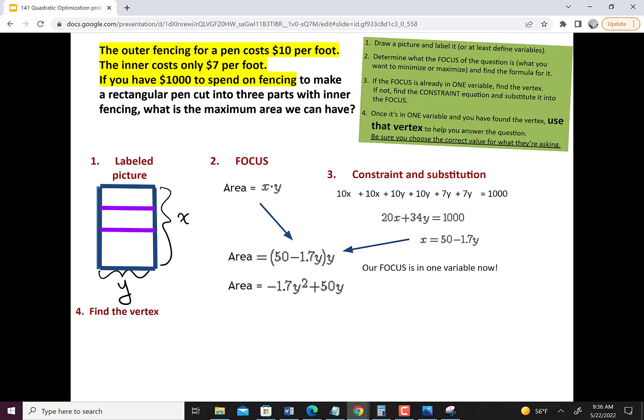And then lastly, we want to find the vertex. Once it's in one variable and you've found the vertex, use that vertex to help answer the question. So we need to find the vertex. We have our formula y is negative b over 2a, and it's really important to say y equals, so you know whether you're finding x or y, depending on what the question answers.